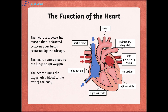As you can see here in the picture, the human heart has four different chambers: the right atrium, the left atrium, the right ventricle and the left ventricle. The blood shown in blue color is de-oxygenated, and the blood shown in red color is oxygenated.